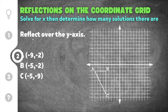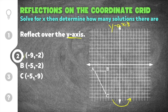Number 2 asks us to reflect over the y-axis, which is the vertical axis. Our original figure A, B, C has already been drawn and it's going to reflect over the y-axis. We have to follow the rule for reflecting over the y-axis: take the original points and change the sign on the x, while keeping the sign on the y value the same.